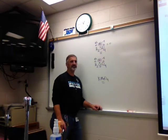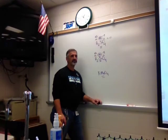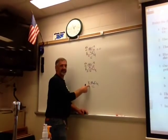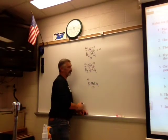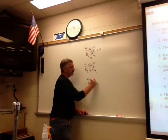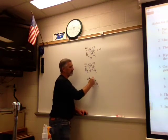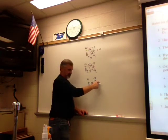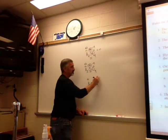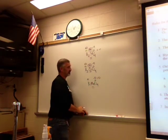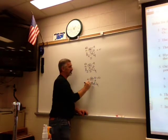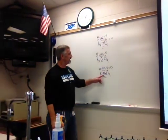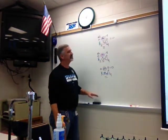For KMnO4: potassium is plus one, oxygen is minus two times four equals minus eight. It's a compound so there's no charge, and therefore it has to equal zero. So manganese must be plus seven.